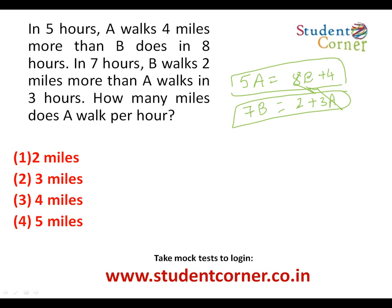We need to find how many miles per hour A walks. Since 5a = 8b + 4 = 4(2b + 1), a must be exactly divisible by 4. From the given options, the only number divisible by 4 is 4 miles per hour. Rather than solving both equations fully, this divisibility insight gives us the answer directly.